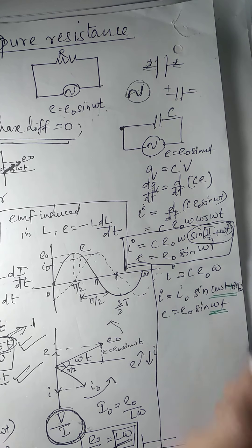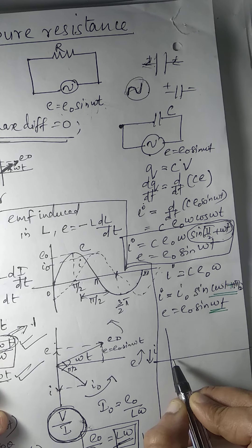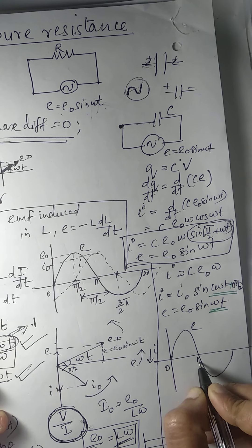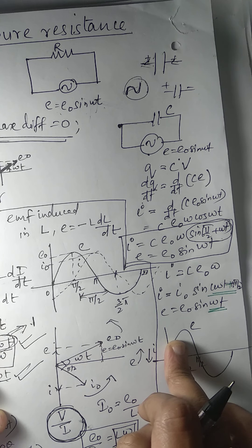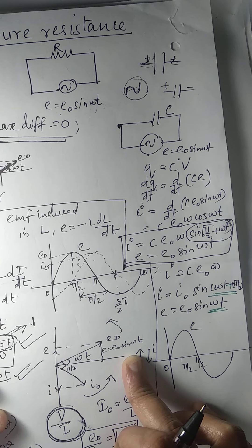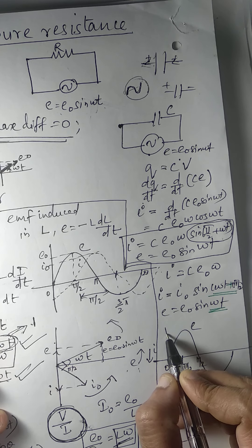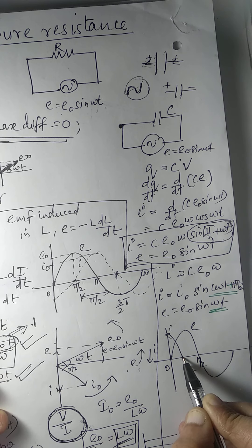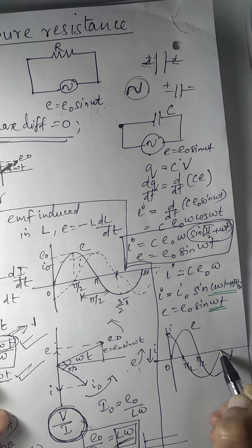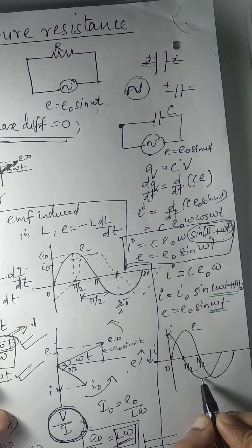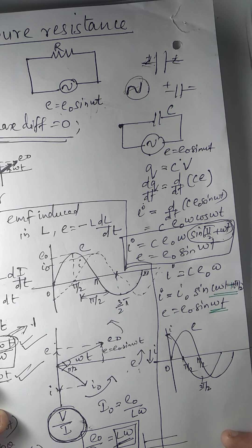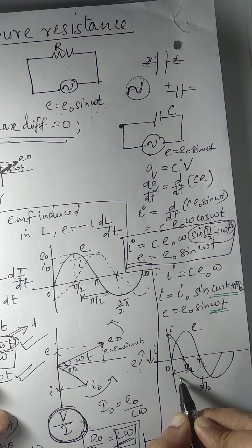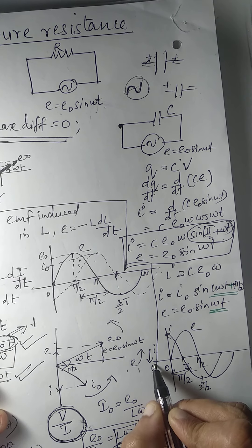Let's look at the corresponding wave diagram. This is the E value. Here is zero, here is π, this is π/2. I is leading the EMF by π/2. We start with I here. This is 3π/2, and this is π/2. So the phase difference is π/2 between I and E.